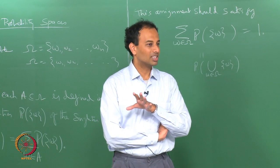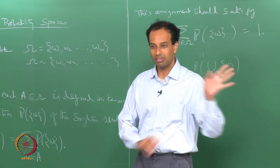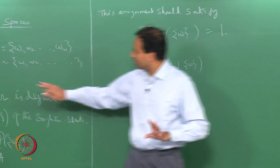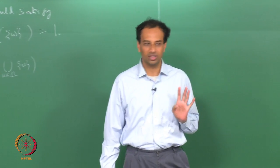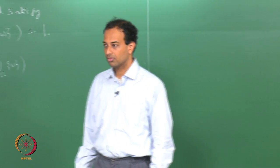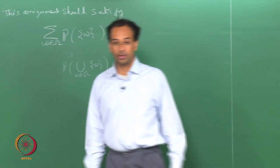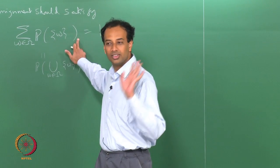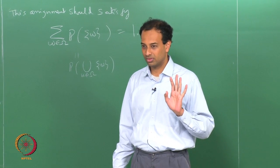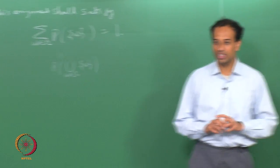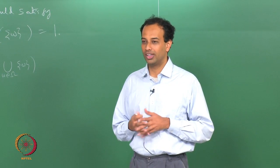When omega is uncountable, we have to settle for a sigma algebra which is not 2 power omega — something smaller, but still keeping interesting subsets in it. So far we are just saying that when omega is countable you can afford to take F as 2 power omega and assign probabilities to all subsets. Any valid assignment of probabilities to singletons satisfying the required conditions is in fact a valid discrete probability space.